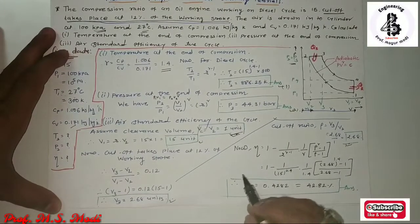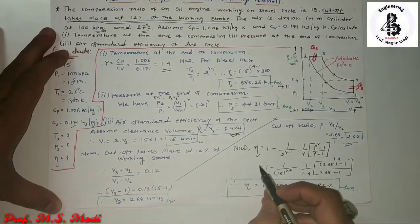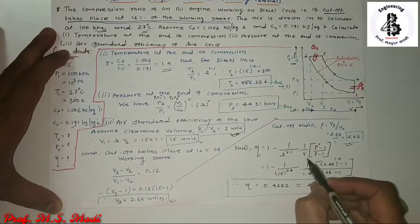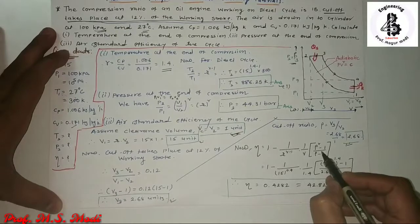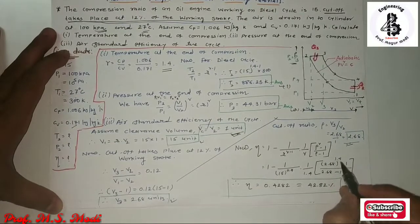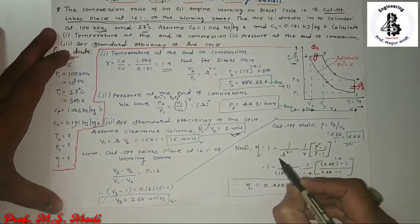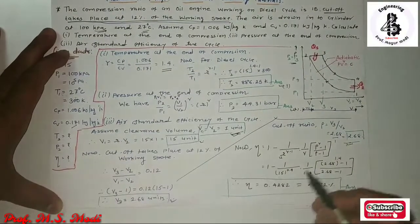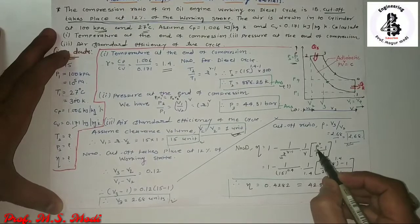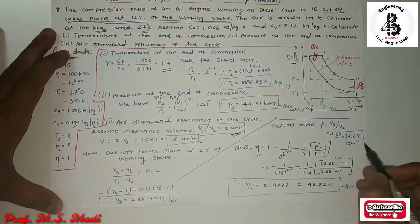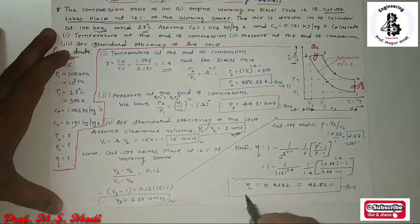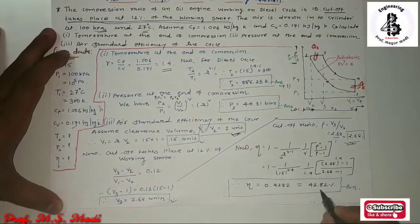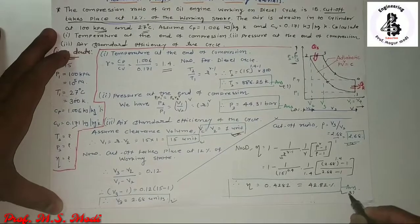The air standard efficiency of the diesel cycle equals 1 minus 1 over R raised to gamma minus 1, multiplied by 1 over gamma, multiplied by cutoff ratio raised to gamma minus 1 over rho minus 1. Substituting compression ratio R equals 15, gamma equals 1.4, and cutoff ratio rho equals 2.68, we get efficiency equal to 0.4282, or 42.82%. That is answer number 3.